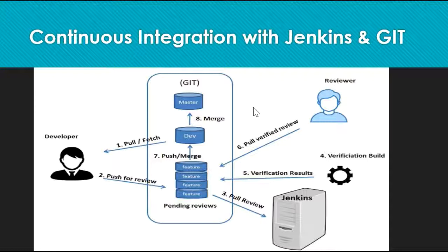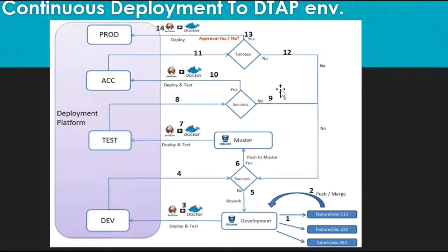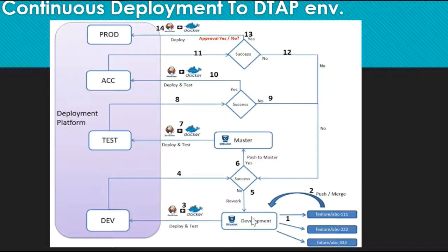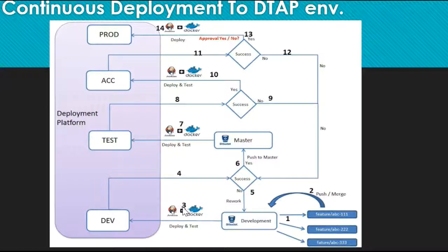Once you have all your latest changes in your Git repository, the next step is how to deploy your application. This diagram shows the continuous deployment process — you should look at this diagram from bottom to top. You can see three feature branches that are merged back to the development branch. Once all feature branches are merged to the development branch, the Jenkins job will be triggered, which will compile the code, build the JAR, convert the JAR into a Docker image, and deploy the application to the development environment.